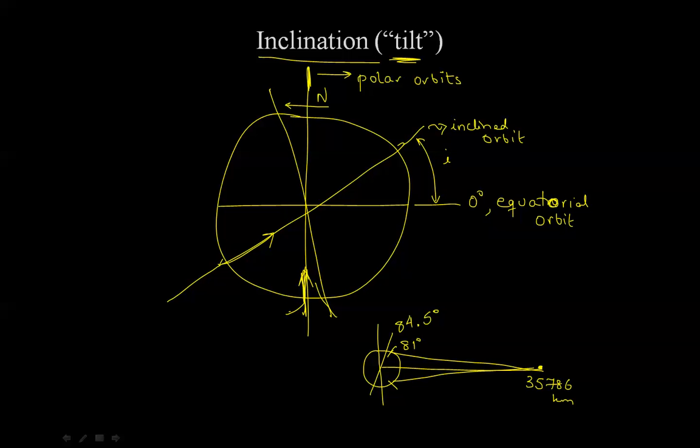But look what's happening here. This object is now going in this direction. Previously it was going with the spin of the Earth. Now clearly it's going against the spin of the Earth. So if I keep increasing the inclination angle, what I will have done is I have essentially turned a posigrade or a prograde orbit into a retrograde orbit.